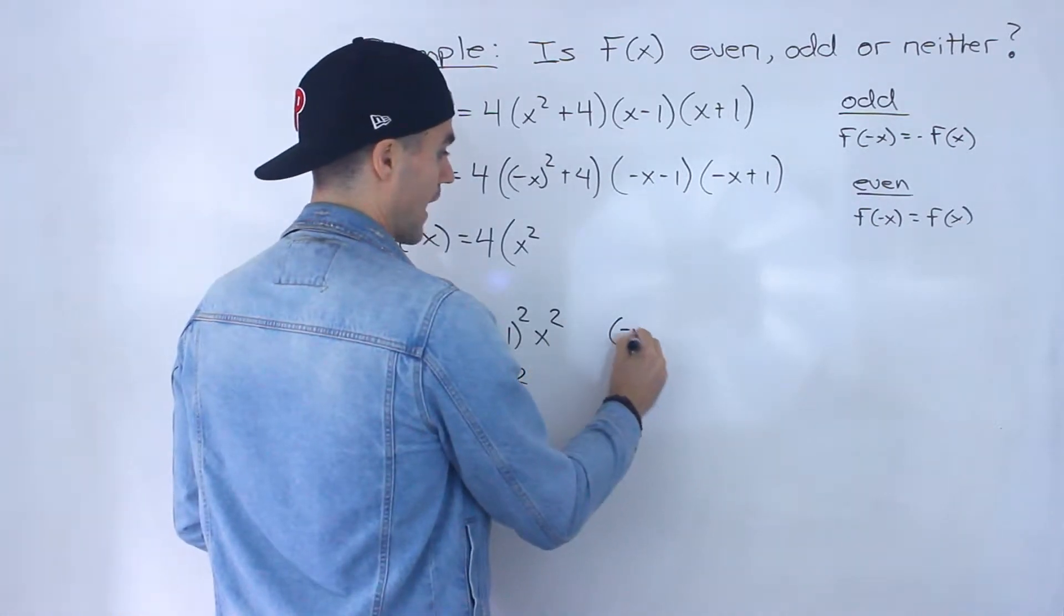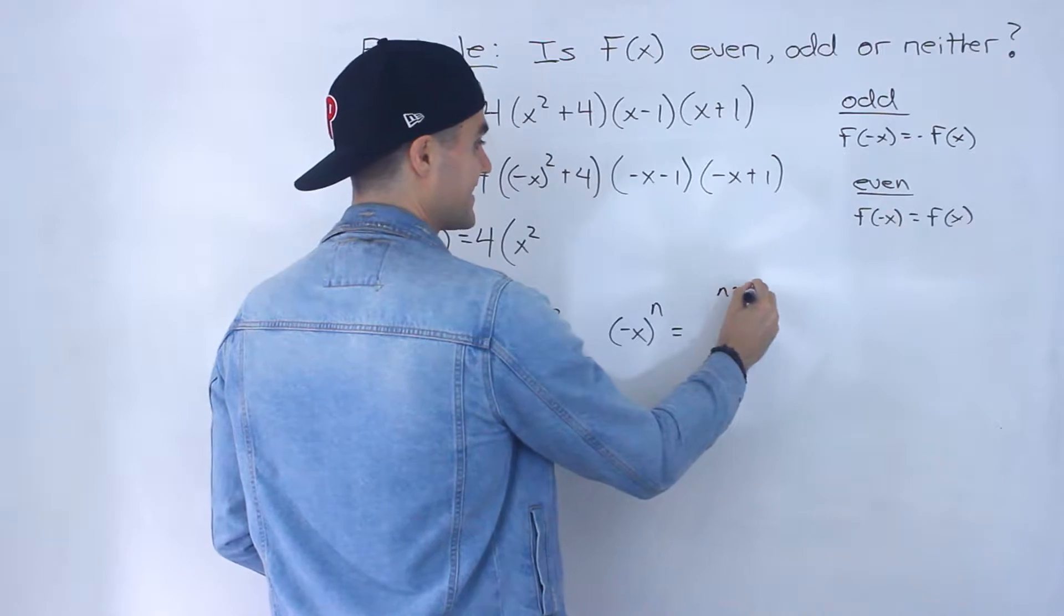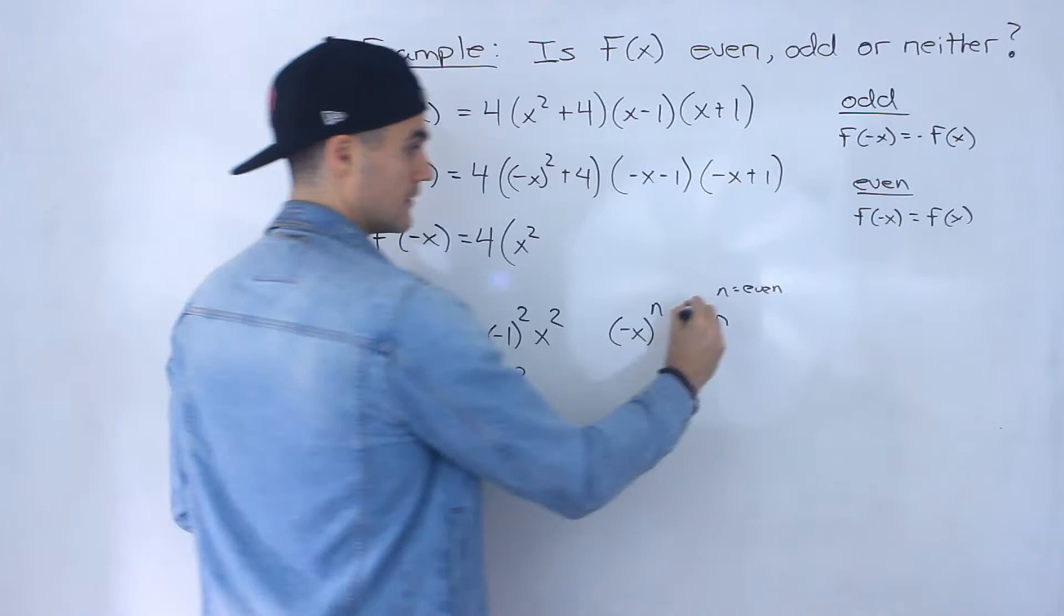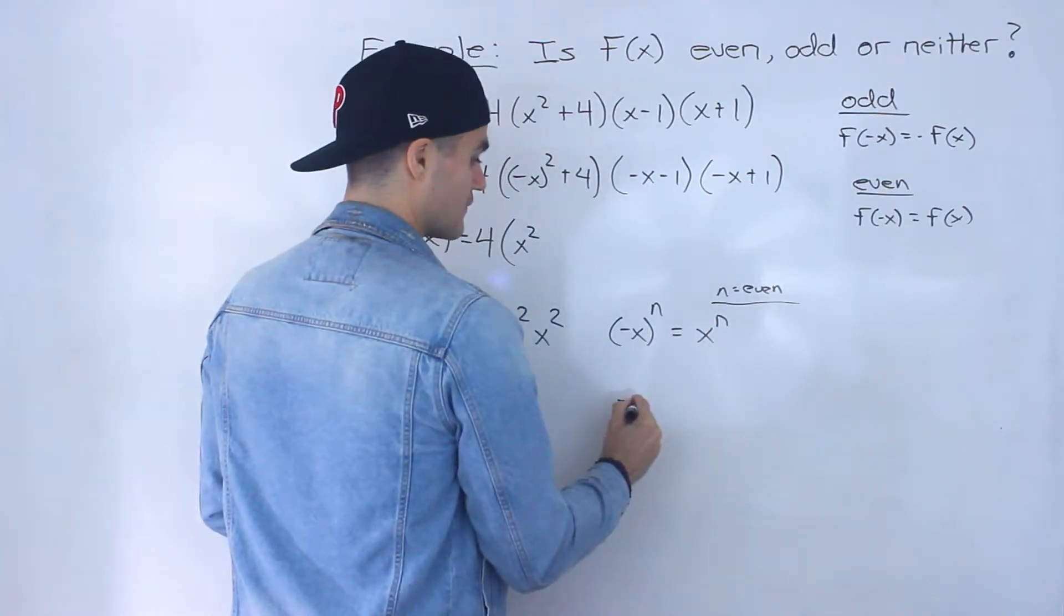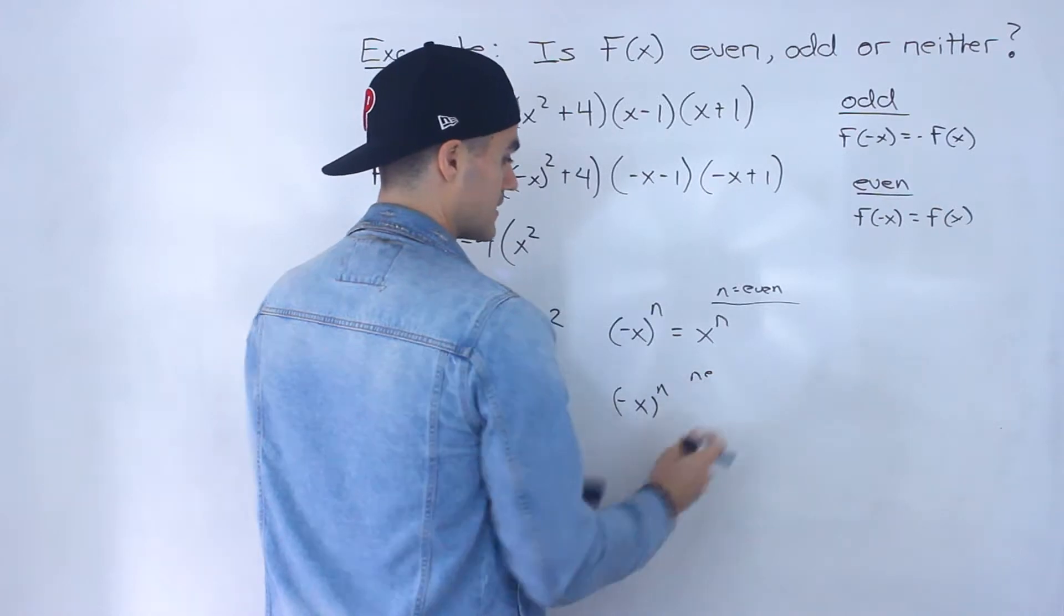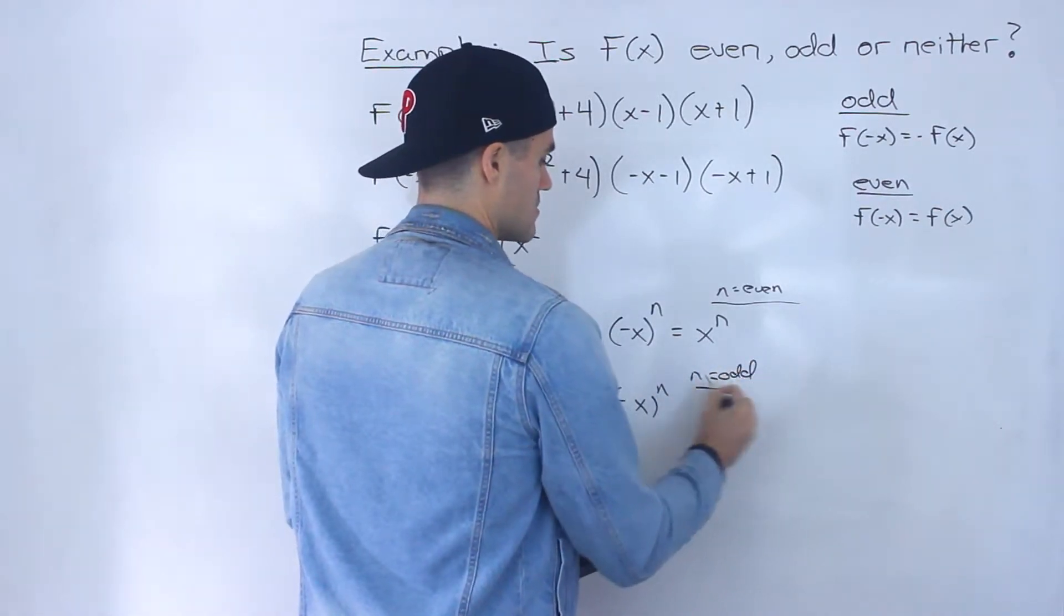In fact, if you have negative x to the power of n and n is an even number, then that's just going to equal x to the n.